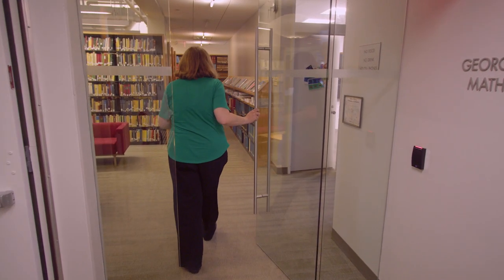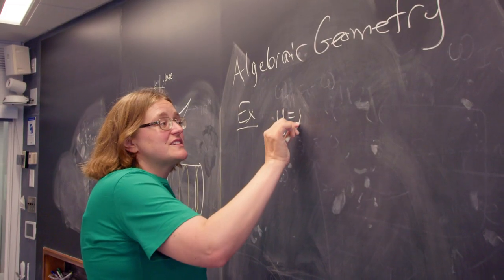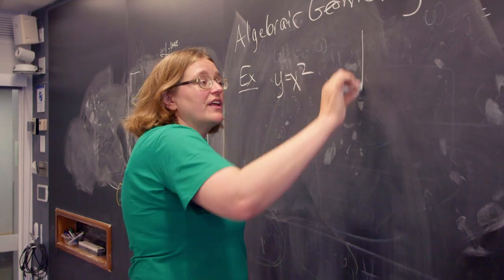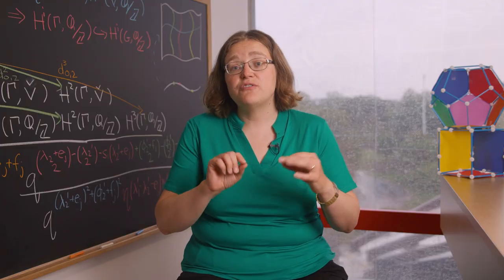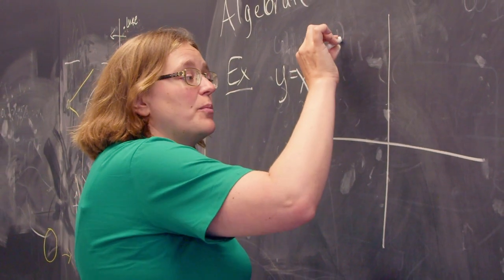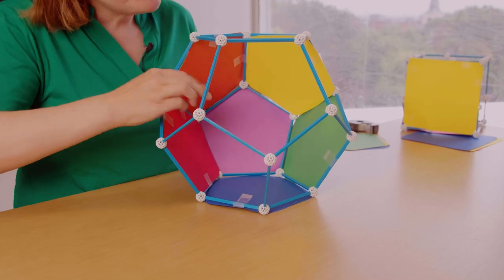I study number theory, so questions about some of the most basic objects in math. Algebraic geometry is the study of shapes like a parabola which is defined by an equation y equals x squared. And so algebraic geometry studies how we can understand shape through the algebra that defines them.